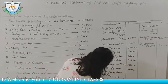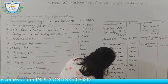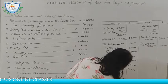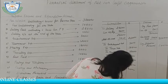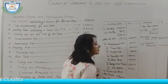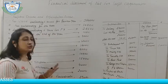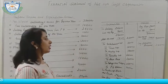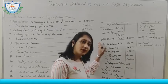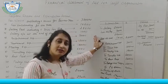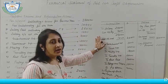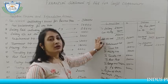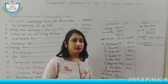After totaling both sides, we find out the surplus — which is rupees 26,000. This completes the simple numerical on how to prepare an Income and Expenditure Account. It is just like the profit and loss account, only current year items are taken and those which are revenue in nature.